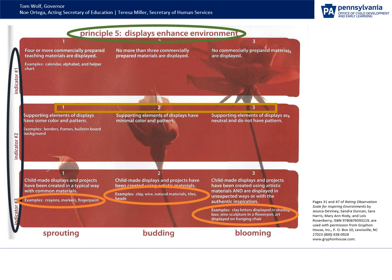Here is a sample page from the Observation Guide. You will see on the top of the page in the green circle is the principle — here we are looking at principle 5, displays enhance environment. Along the left side of the page circled in black are the indicators. This principle has 13 indicators but we're only looking at three of those 13. Each indicator starts with beginning levels of quality and builds off each other. If you look at indicator 2, the yellow box shows the progression and each are assigned a number 1, 2, or 3. Some of the levels give examples, illustrated by orange circles. Now that you have an idea of the layout, we're going to discuss each of the seven principles in ROSE.